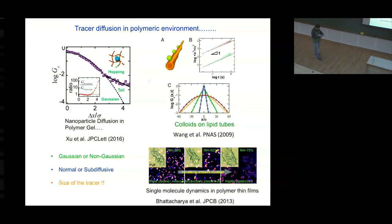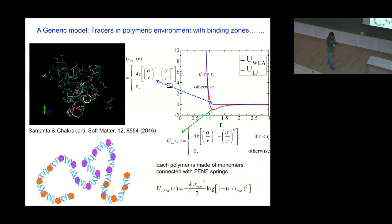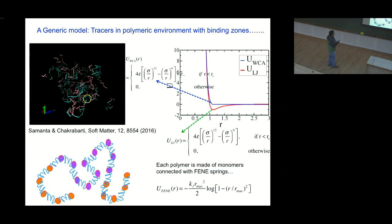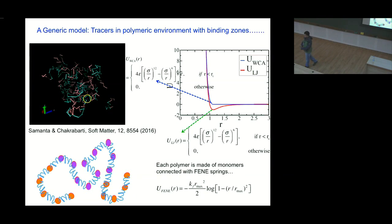Motivated by this series of experiments, we came up with a very generic simulation model — not mimicking any particular experiment. The model is as follows: you have a tracer, this tiny purple color ball, and a collection of polymers. Each polymer is made of 20 monomers connected by FENE springs — like a harmonic spring for small displacement but with a very high barrier so the bonds cannot be broken. These are FENE springs.